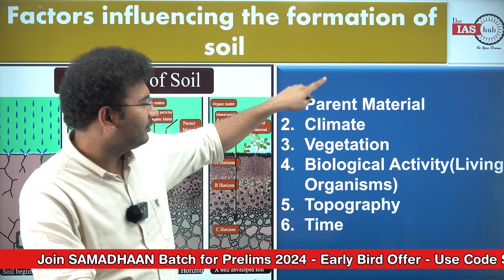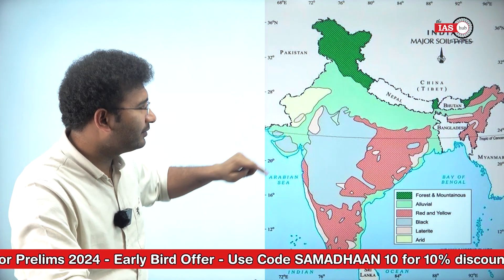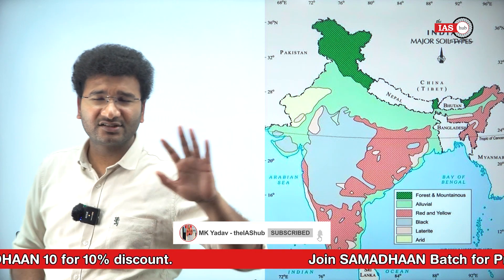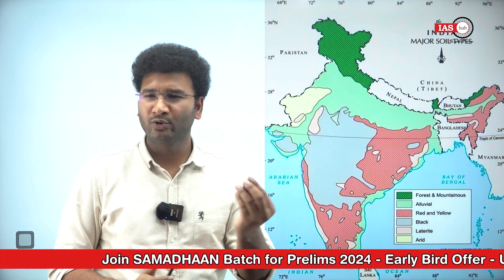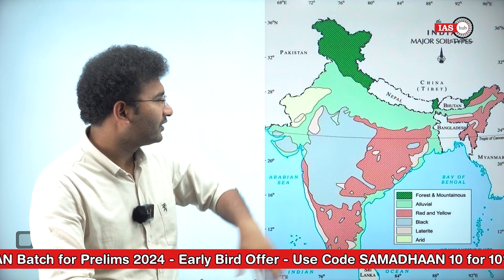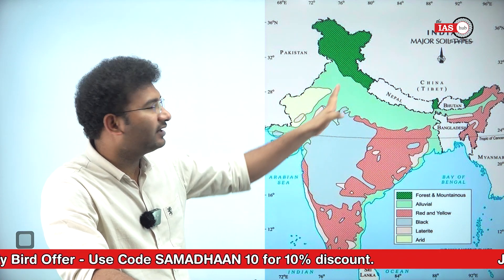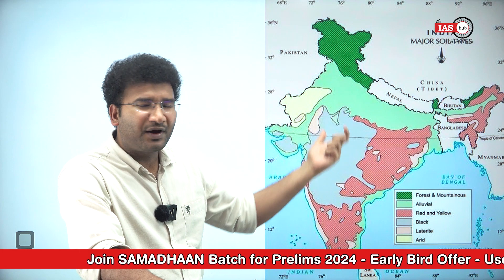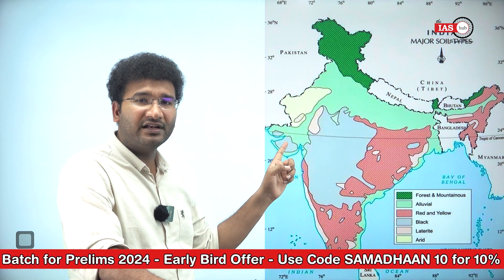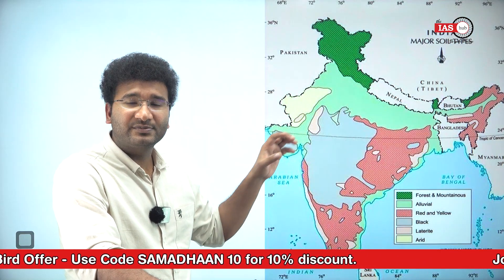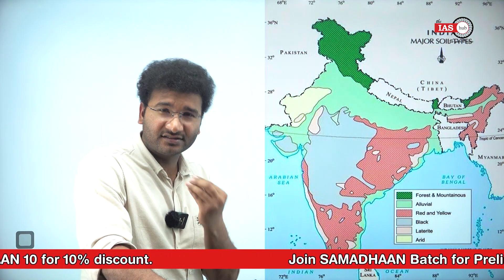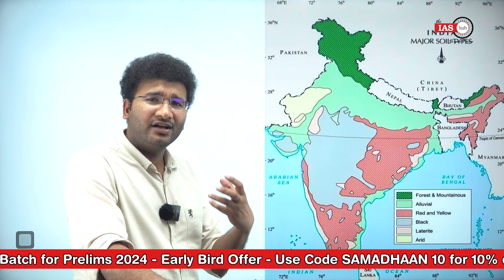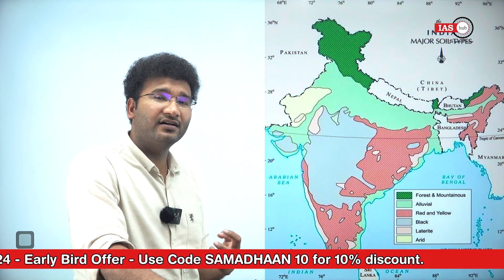The first factor we'll discuss is parent material. India has majorly six to seven different types of soils — black soil, red soil, laterite soil, alluvial soil, desert soil, mountain soil, and in small areas, swampy and marshy soils. Every soil has a parent material. This parent material will decide the texture, permeability, and porosity of the soil, and can also decide the color of the soil.